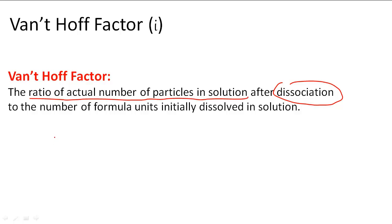So for example, to figure out i, we denote i for Van't Hoff factor. Let's say for NaCl, we know it separates out to Na+ and Cl-. So this i is going to be equal to 2 because there are 2 moles of dissolved particles.